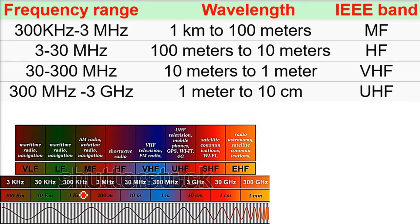This is what I am talking about from here to here. The different functions include maritime radio, navigation, AM radio, emission radio. Then 3 to 30 megahertz, this is the high frequency, that is from 100 meter to 10 meter. Shortwave radio.